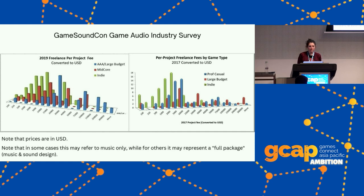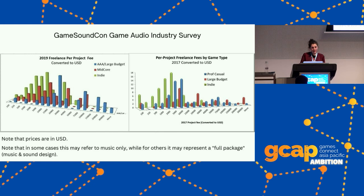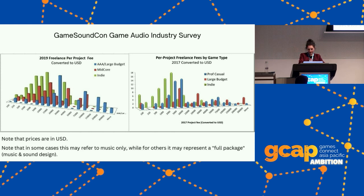For a per-project fee, the 2021 survey showed indie rates ranging from a few thousand dollars up to around $10,000, depending on how much music is needed. The 2017 data showed a similar range, around $1,000 to $10,000. These figures could refer to just music or a full audio package, and the size of the project makes a big difference — a mobile title needs a lot less music than a bigger project.